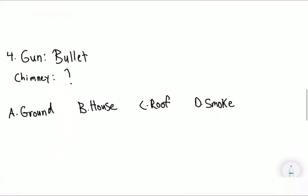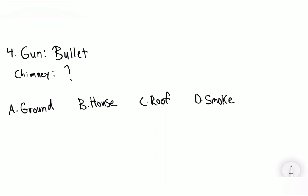Let's look into question number four. Question number four says gun, bullet, chimney, question mark. You can think of it this way. What comes out of a gun? A bullet comes out of a gun. What comes out of a chimney? A house does not come out of a chimney. A ground does not come out of a chimney. A roof does not come out of a chimney. That means smoke comes out of the chimney. Leading us to D being the answer.